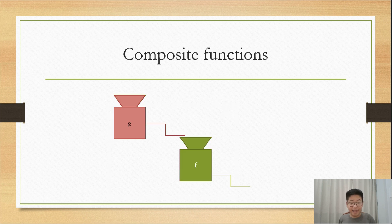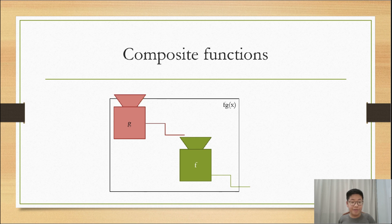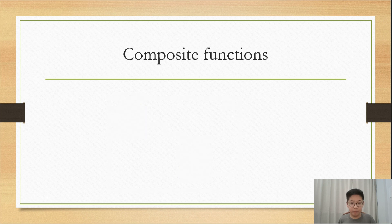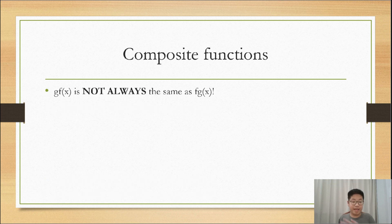Let us instead let the output of g flow into the input of f. Can we represent this as a function? Still yes, since there is only one input and there is only one output. But this type is called fgx, reading the machines from bottom to top. Always remember this when you are doing composite functions. gfx is not always the same as fgx.